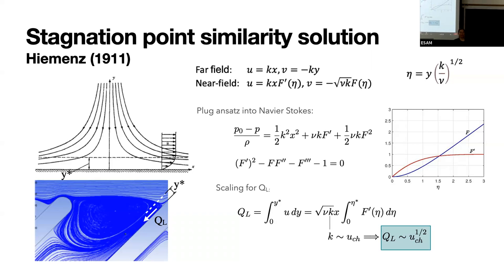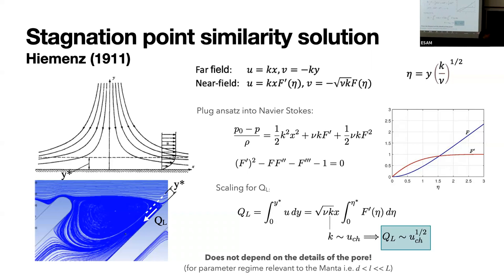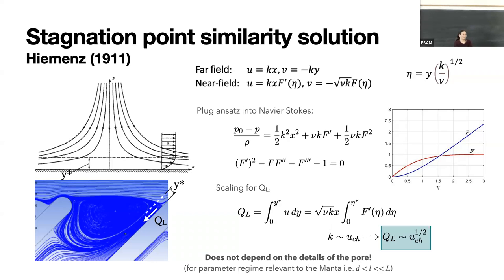There's one thing you should be noticing: there's nothing about the geometry of the filter in this expression. It doesn't depend on the width, thickness, or angle of the filter. It just says the Q_L scales like U to the one-half, regardless of the geometry. So in the vortex regime, within the parameter range relevant to the manta, I have now lost the details of the pore geometry. This means either we've screwed something up, or everything should collapse onto one line with a slope of one-half when in the vortex regime.